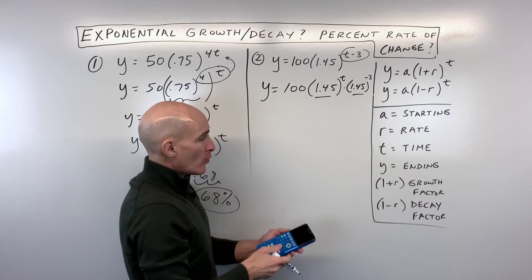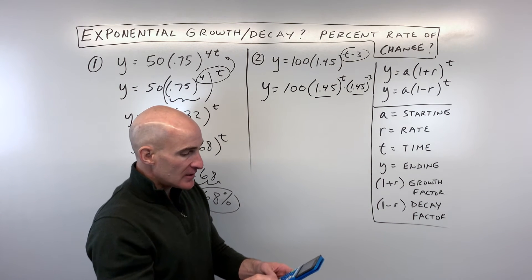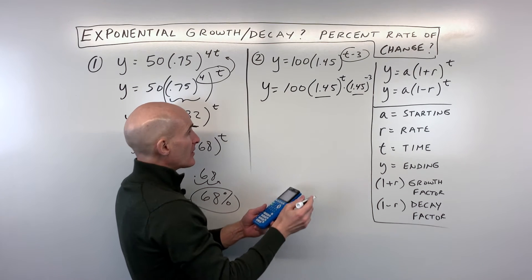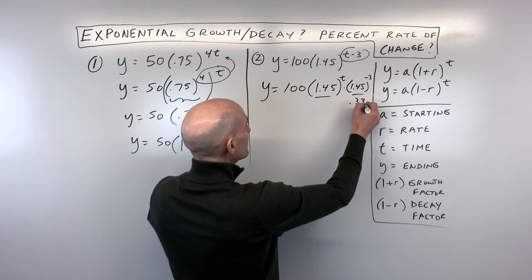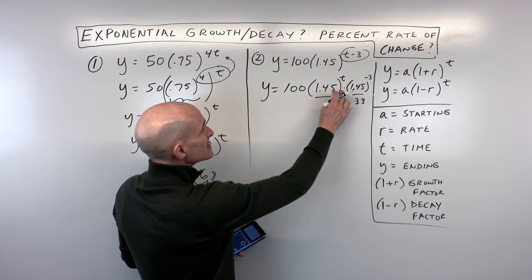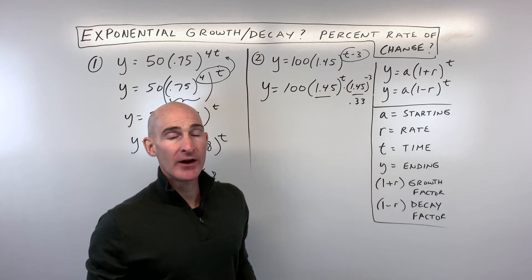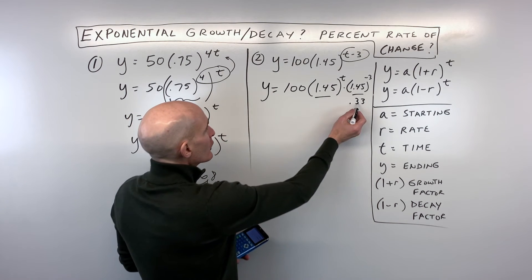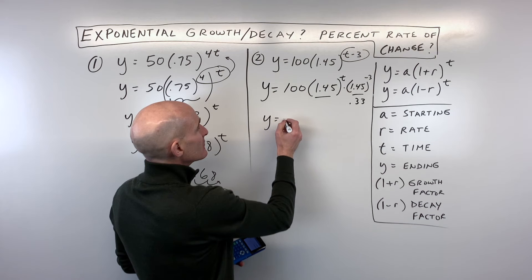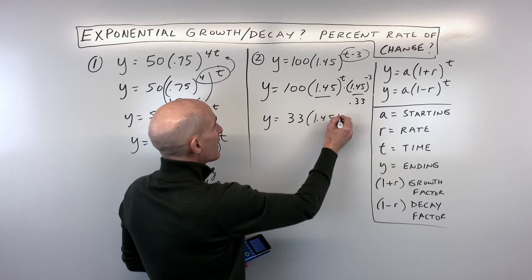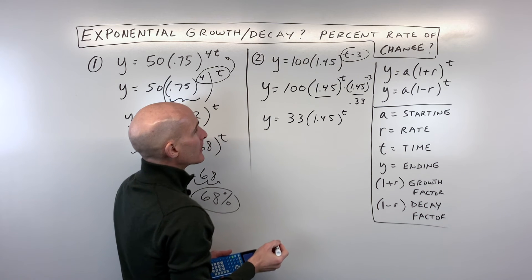Now I'm going to go to the calculator here and figure out what 1.45 to the negative third power is, and I'm getting 0.33 approximately, and I'm going to multiply that by 100. Now the reason that I can do this is because, see how all three of these groups are multiplied together? Multiplication is commutative, you can change the order. So if we multiply 100 times 0.33, that's going to give us 33, 1.45 to the t power.